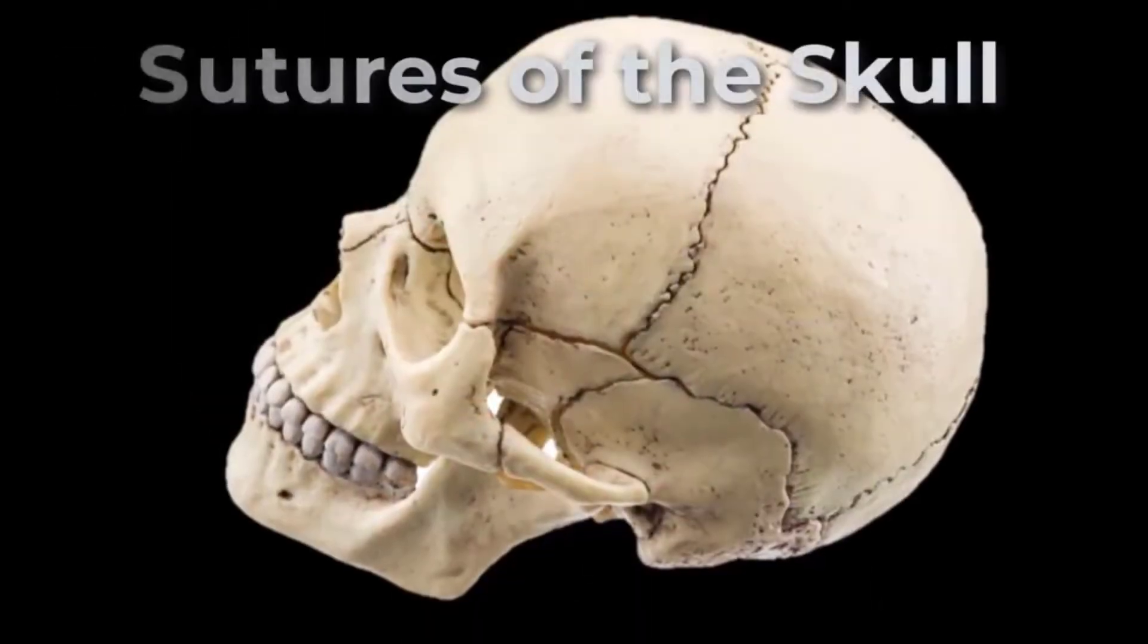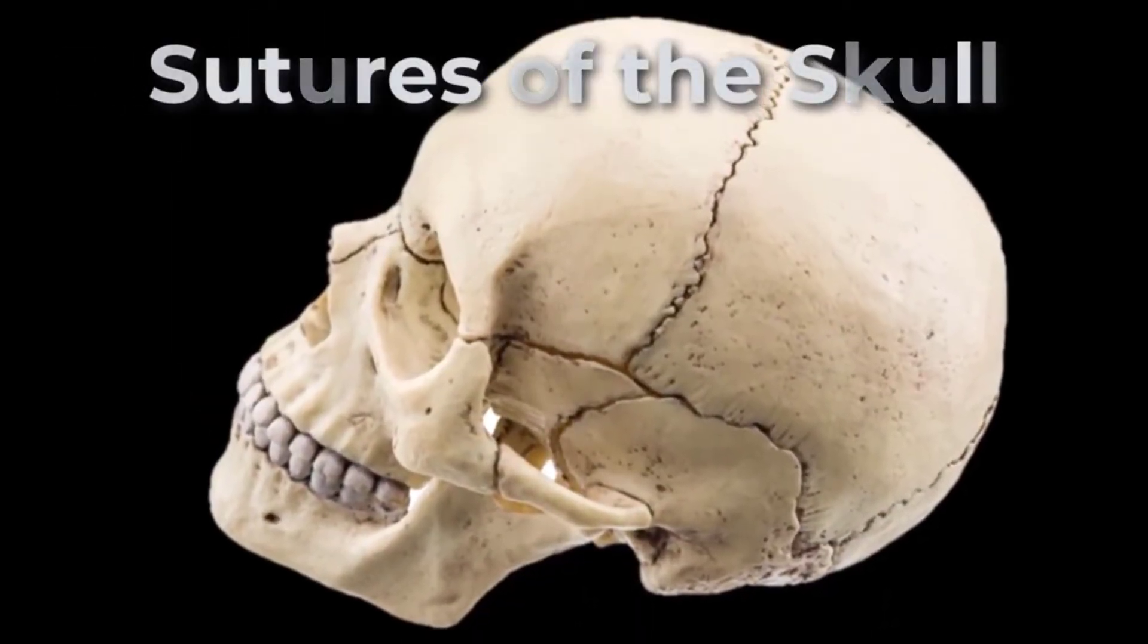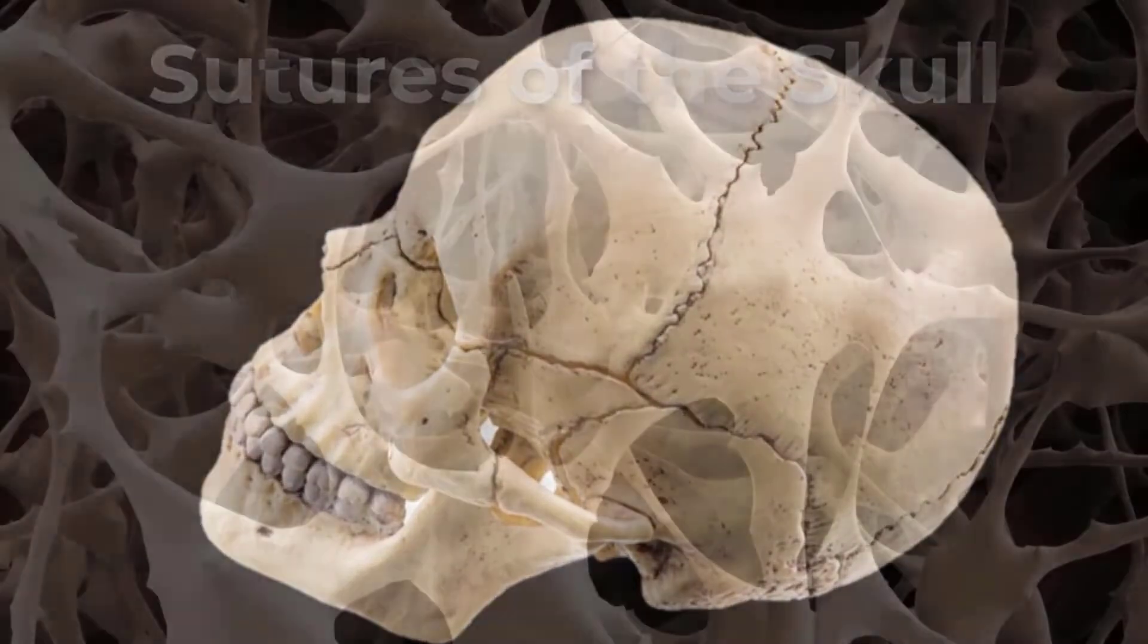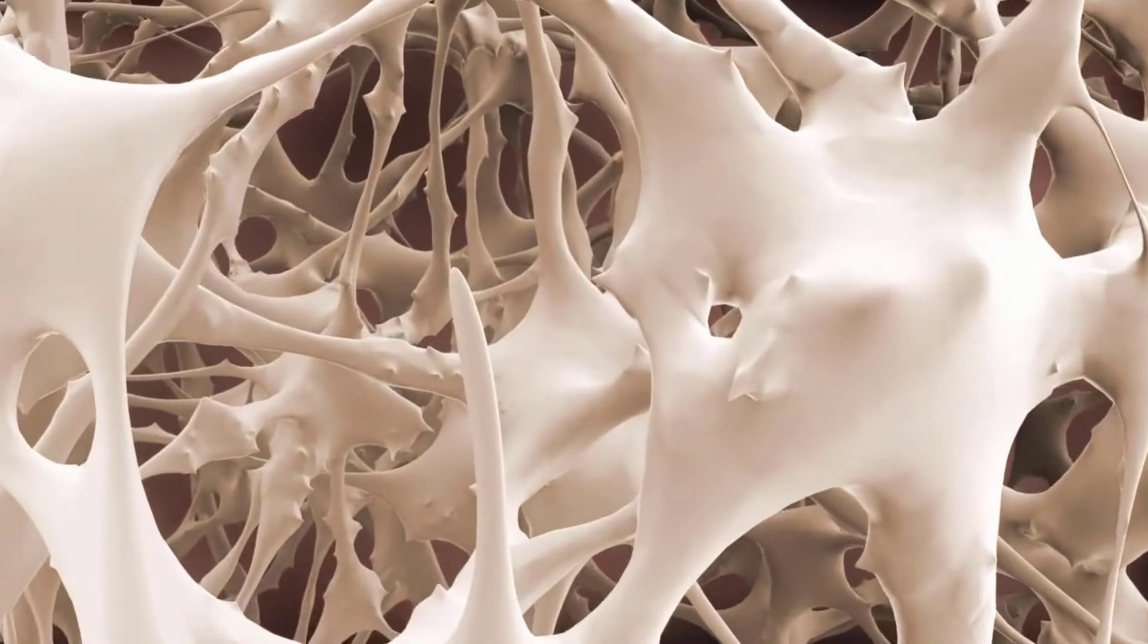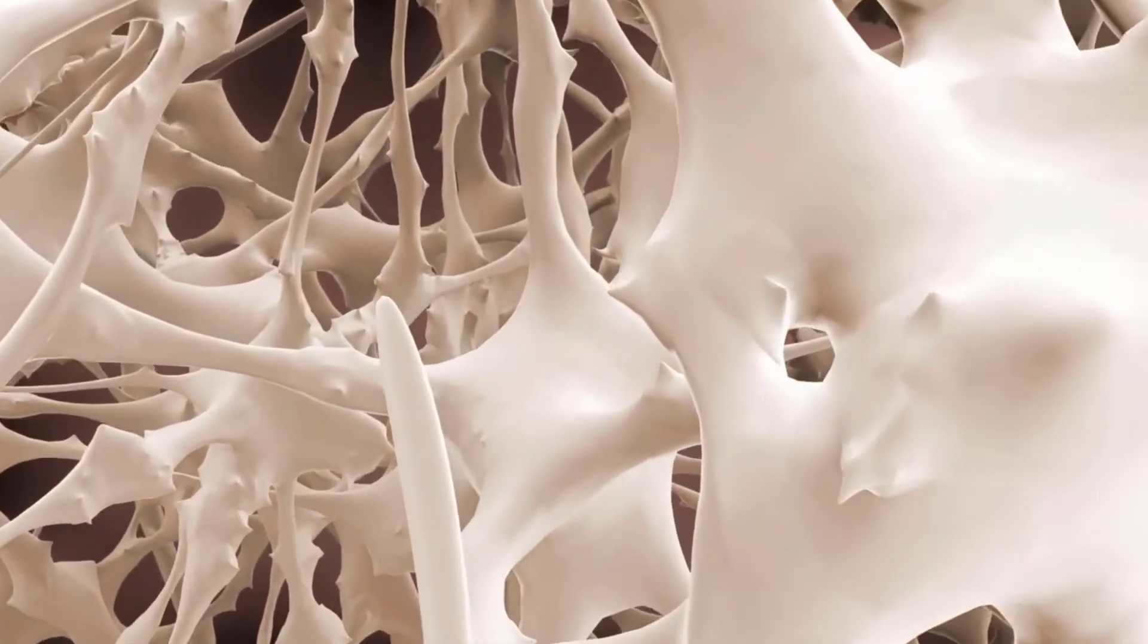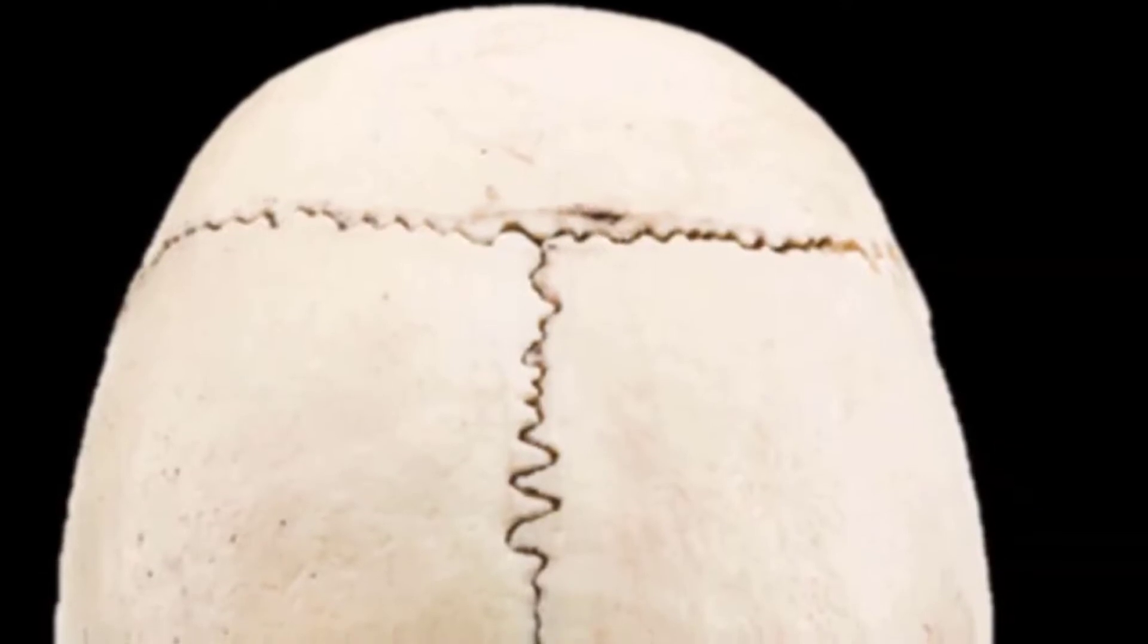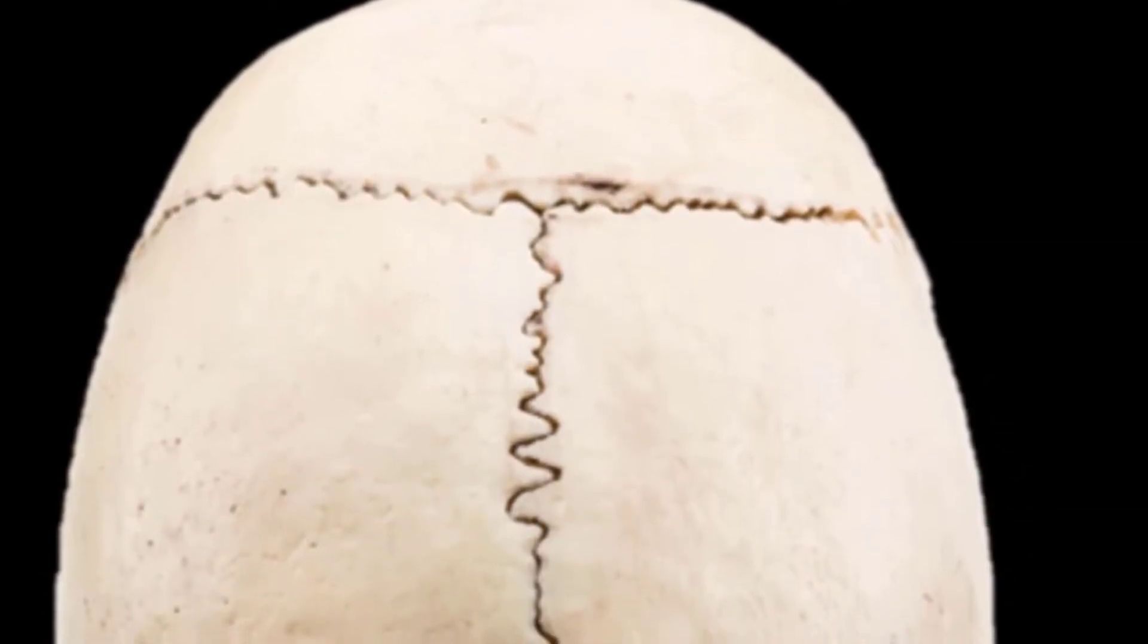A suture is an immobile joint between adjacent bones of the skull. The narrow gap between the bones is filled with dense, fibrous connective tissue that unites these bones together.